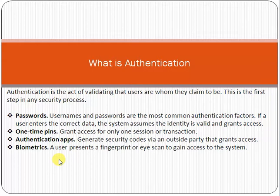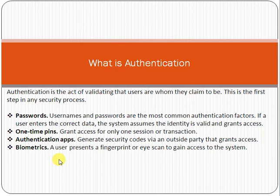One-time password or OTP is another type of authentication — it grants access for only one session or transaction. OTP is normally used at the time of transactions, like mobile apps or internet banking portals. Authentication apps generate security codes by an outside party that grant access. Biometric authentication means a user presents a fingerprint or eye scan to gain access to the system. These are very common examples of authentication.